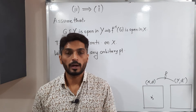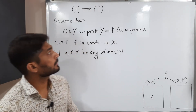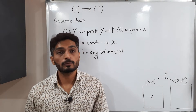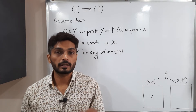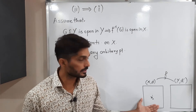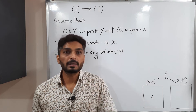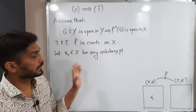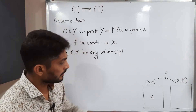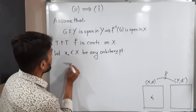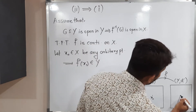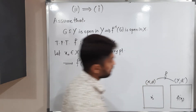Let us do 2 implies 1. We assume: if G is open in Y, then f inverse of G is open in X. We have to prove that f is continuous on X. Let x₀ be any arbitrary point in X. Since x₀ belongs to X, f(x₀) belongs to Y. Let ε > 0 be given. We have to prove f is continuous at x₀.